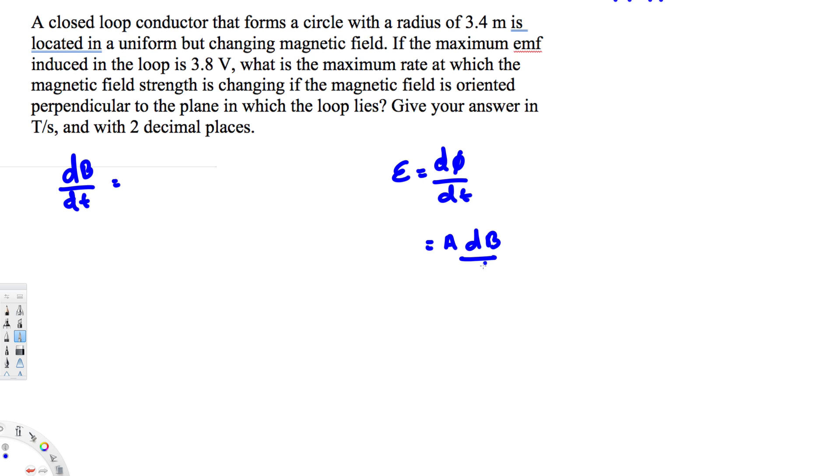And this dΦ is equivalent to A times dB, where A is the area and dB is the magnetic field divided by time. And dB/dt is what we want, right? So we have to rearrange this equation. We have to bring this area to this side, so dB/dt is going to be equivalent to emf divided by the area.